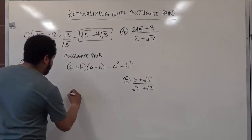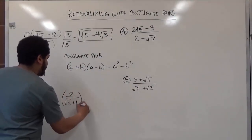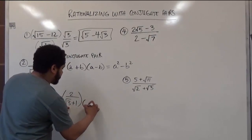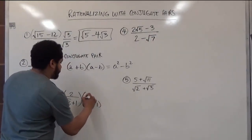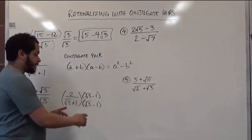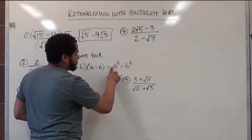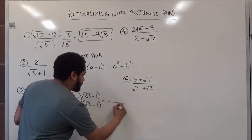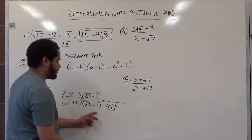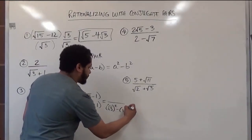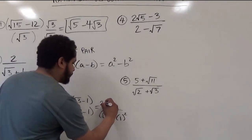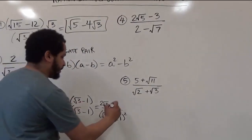In this case, we have the fraction 2 over radical 3 plus 1. We're going to multiply the numerator and denominator by the conjugate pair of the denominator, which is going to be the square root of 3 minus 1. The conjugate pair is the plus pairing with the minus. When these two pair off, they create the difference of two squares. For the denominator, we take the first term, square root of 3, and square it; take the second term, 1, and square that as well. For the numerator, we distribute the 2 to each term, getting 2 radical 3's, and 2 times negative 1 is negative 2.